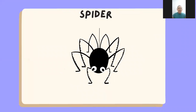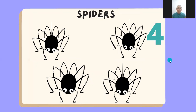What is this creature? This is a spider. It's black. Now let's count them. We have one, two, three, and four spiders. This is the number four. And the spiders are black.